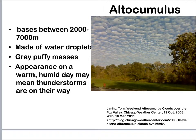Altocumulus clouds are higher yet. These are small and puffy — they look a little smaller than cumulus clouds because they're higher up and farther away. These are also made of water droplets. You'll tend to get these on warm, humid days, and they could also mean a thunderstorm could be approaching later in the day.